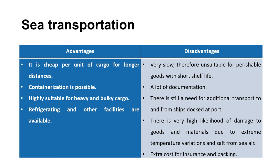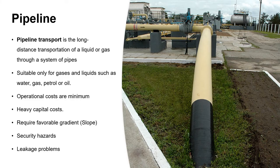The main advantage of sea transportation is that it is very cheap for longer distances. Another special type of transportation is pipeline transport — a long-distance transportation of liquid or gas through a system of pipes. It is suitable only for gases and liquids such as water, gas, petrol, or oil. Operational costs are minimal but there is heavy capital cost, as the government has to purchase many pipes and do a lot of construction. It also requires a favorable slope of the ground since most pipelines go underground, and there can be security hazards and leakage problems.